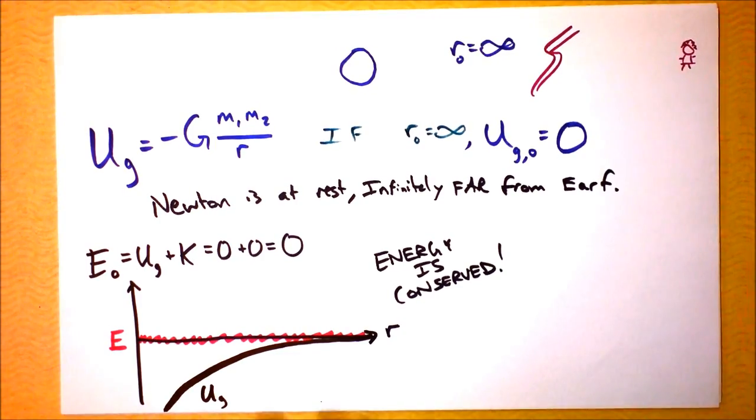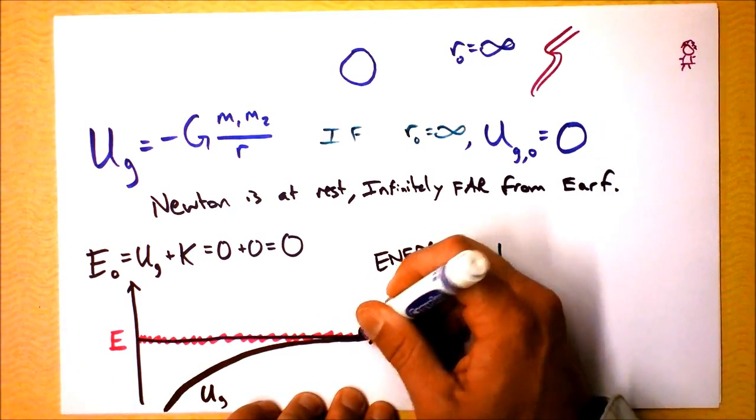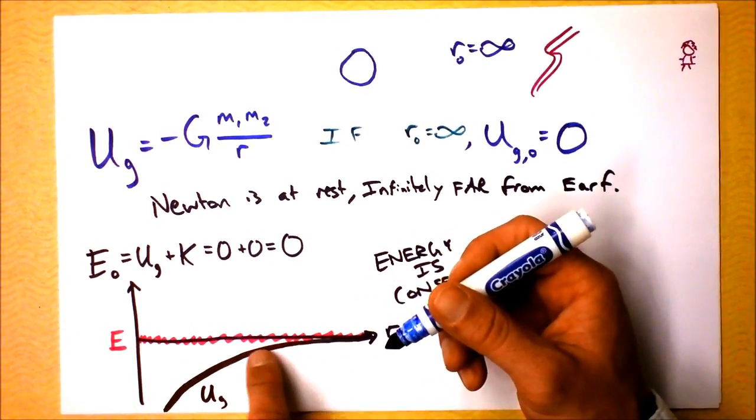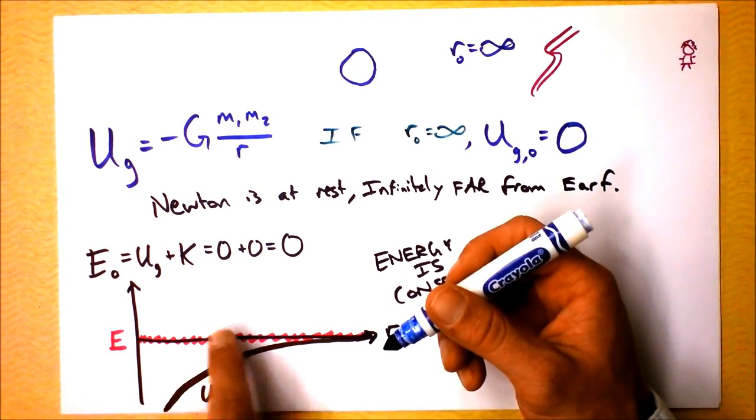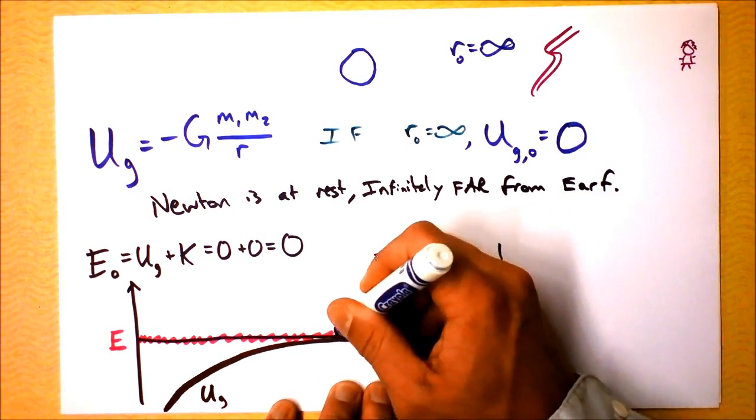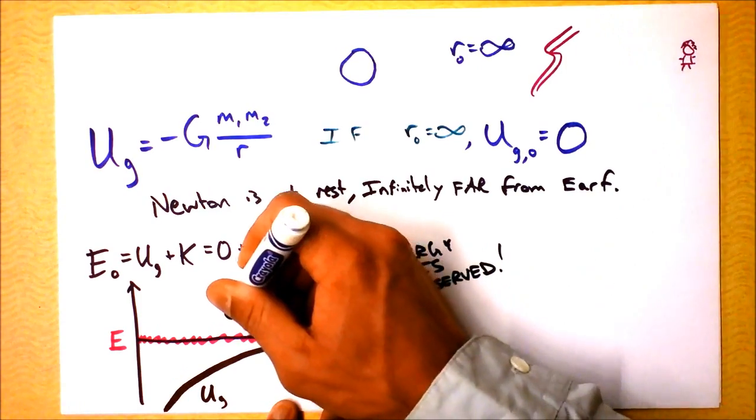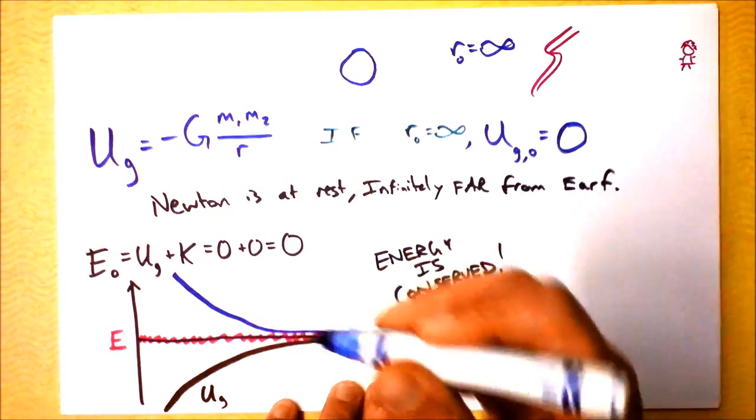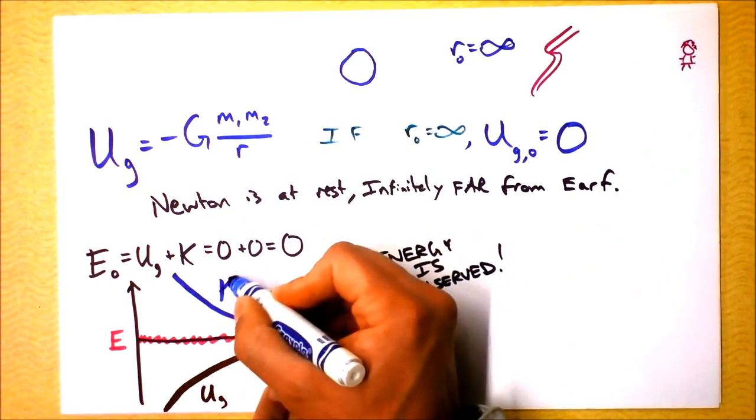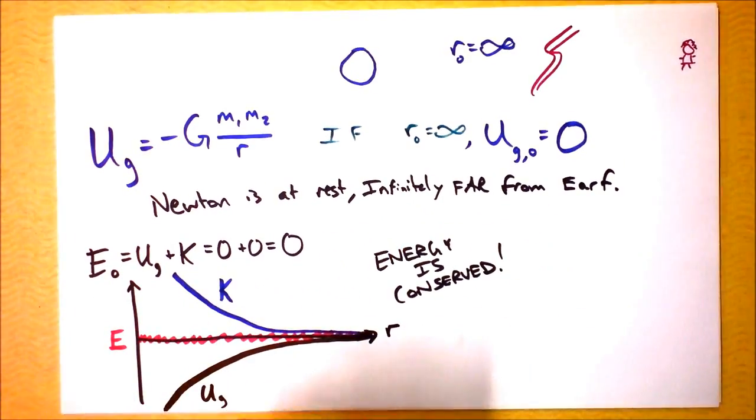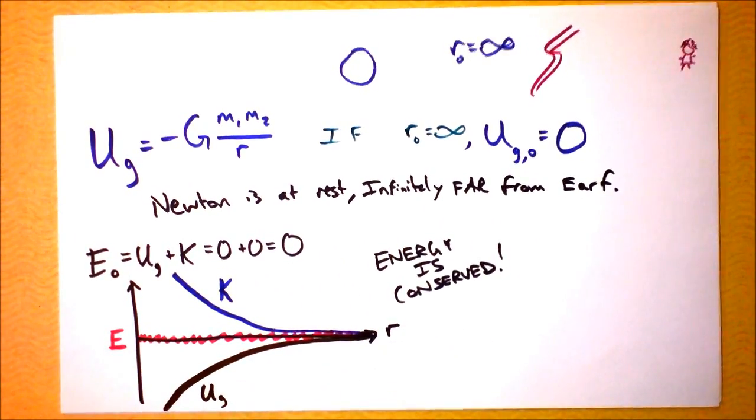I need to find something that, when added to this function, gives zero. It's going to be the opposite of the function I've got written above. So this is Newton's kinetic energy. Let's figure this sucker out.